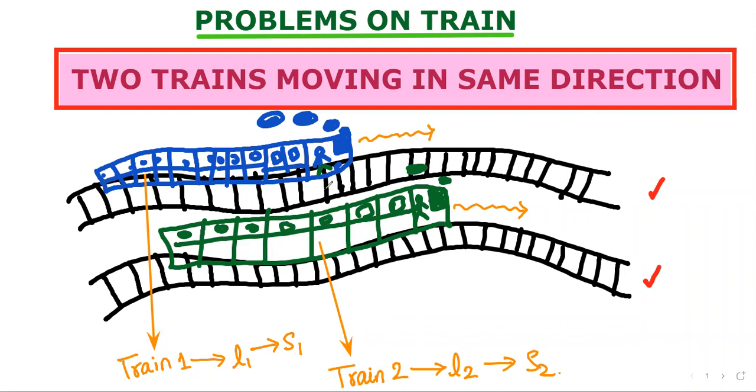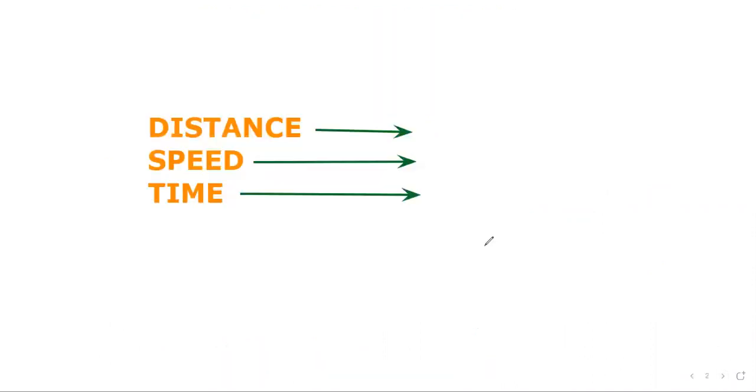So as we know, basically, we need to know what are the changes that we require to do in three parameters, according to the scenario given. So talking about the scenario, this train has a length of L1 and this train has speed S1. And the green color one, second train, which has L2 as its length and speed as S2. So if this is the case, then what happens to the distance parameter, then what happens to the speed parameter and what happens to the time parameter. Let's see it one by one.